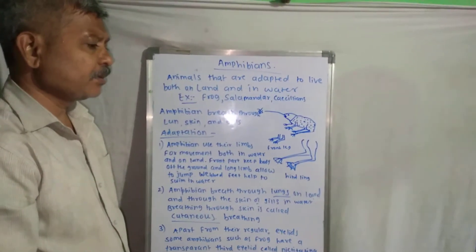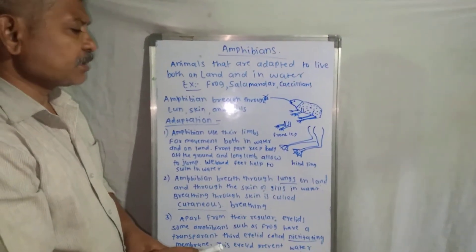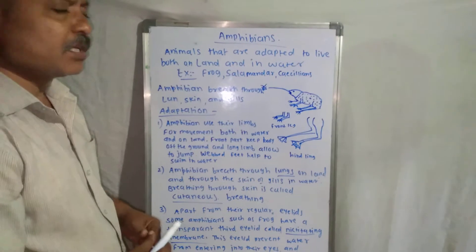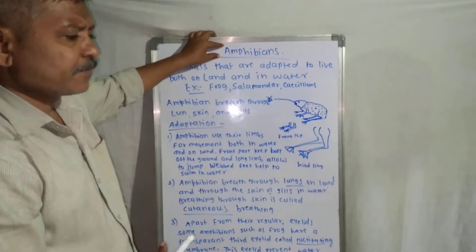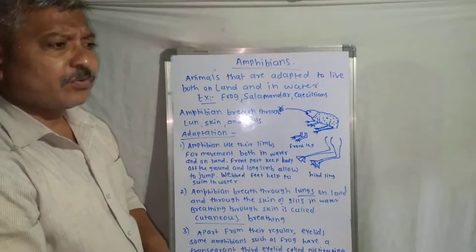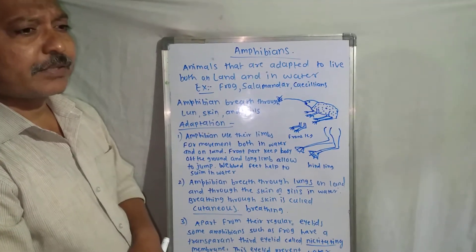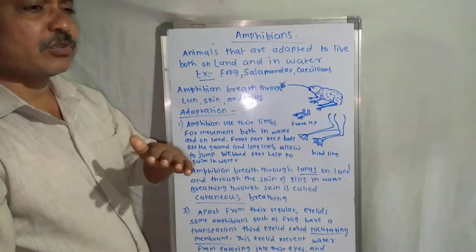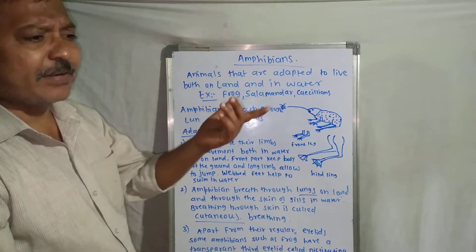Before this we saw adaptation in two types of animals: aquatic and terrestrial. Now we move towards the third type, which is amphibians. Amphibians are animals adapted to live both on land and in water.